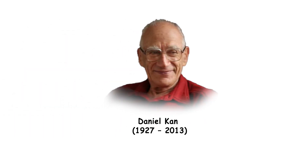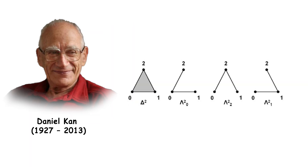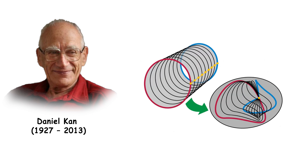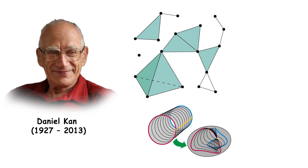Daniel Kan was a Dutch-American mathematician known for his work in algebraic topology and category theory. He introduced the concepts of Kan complexes and Kan fibrations, which are fundamental in homotopy theory and the study of simplicial sets. His work has been influential in the development of modern topology and categorical methods.